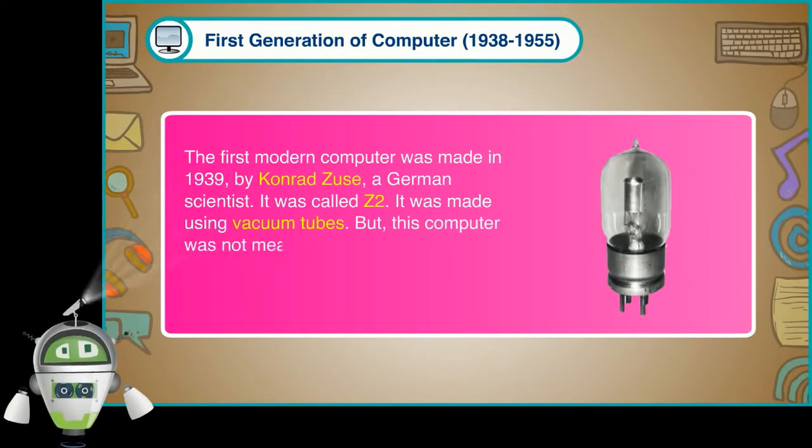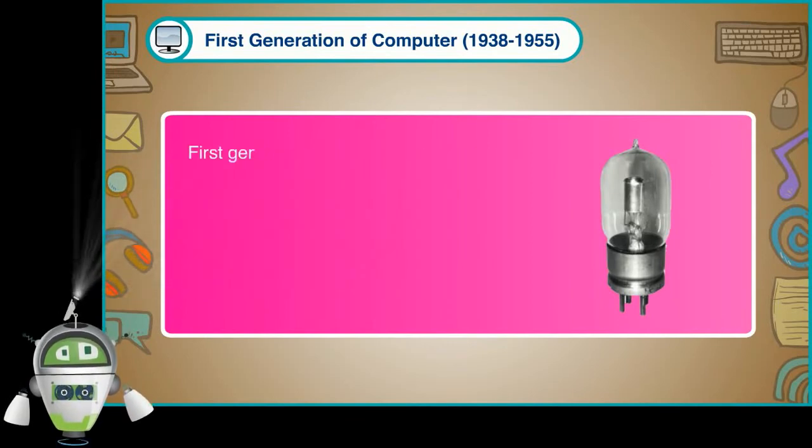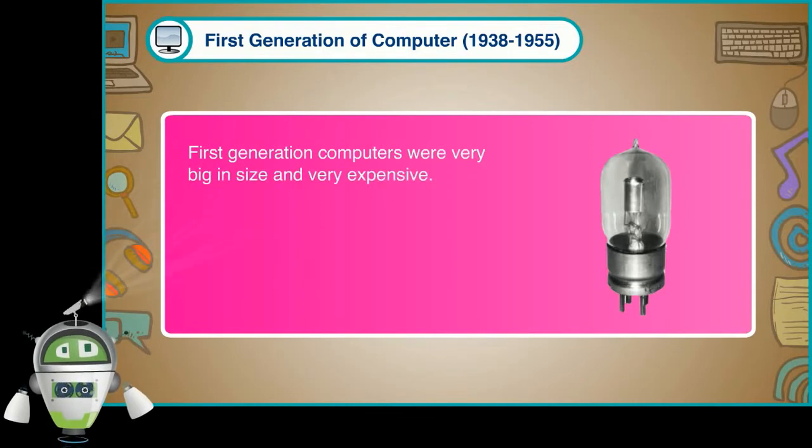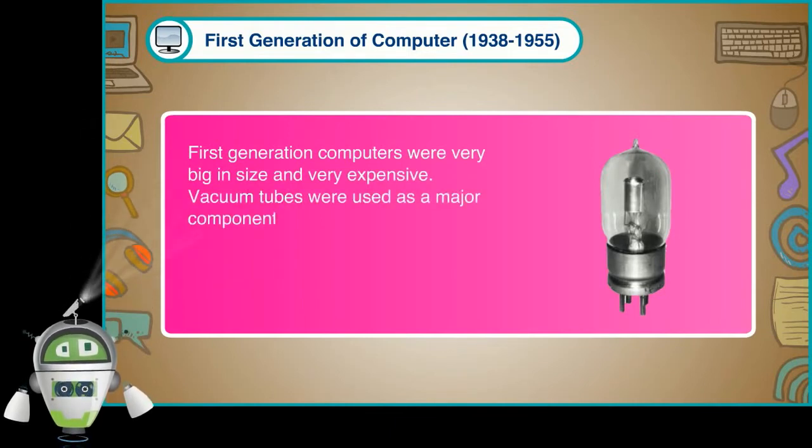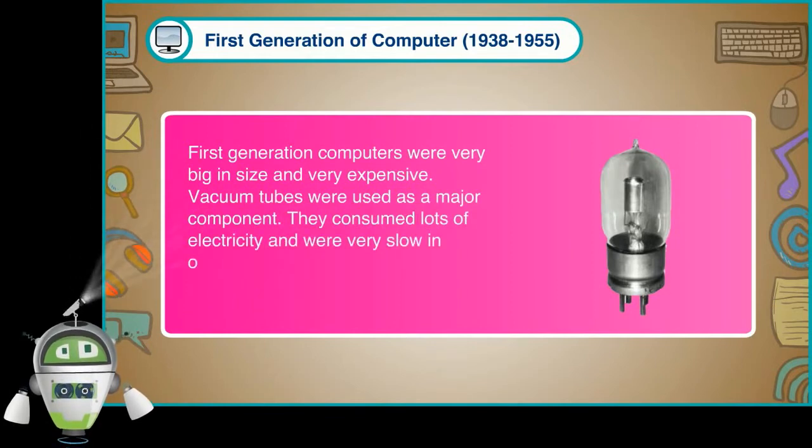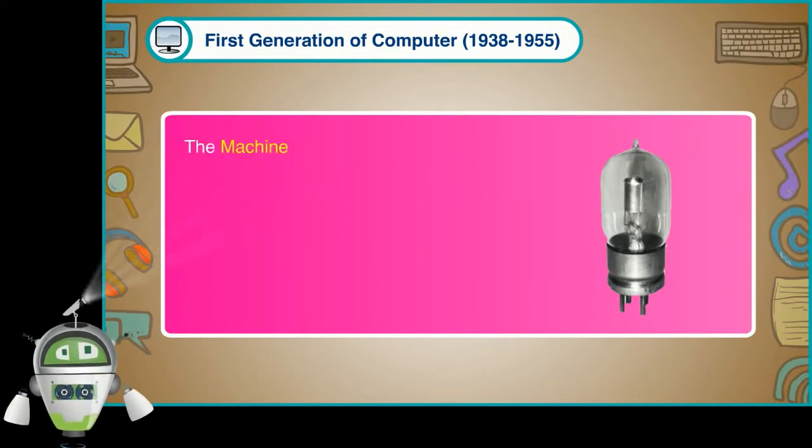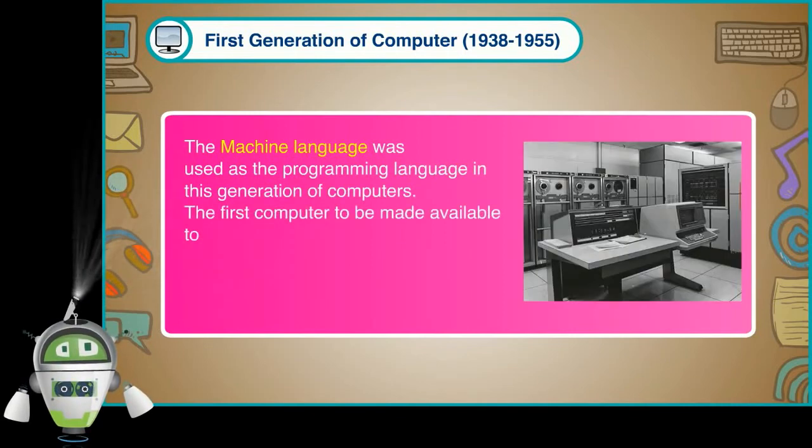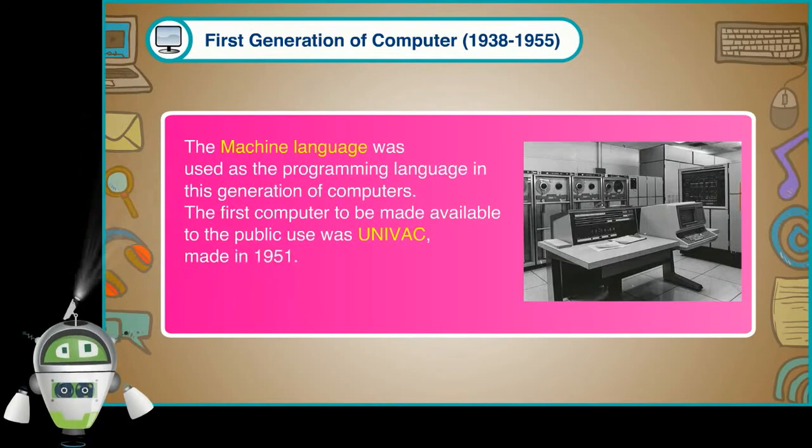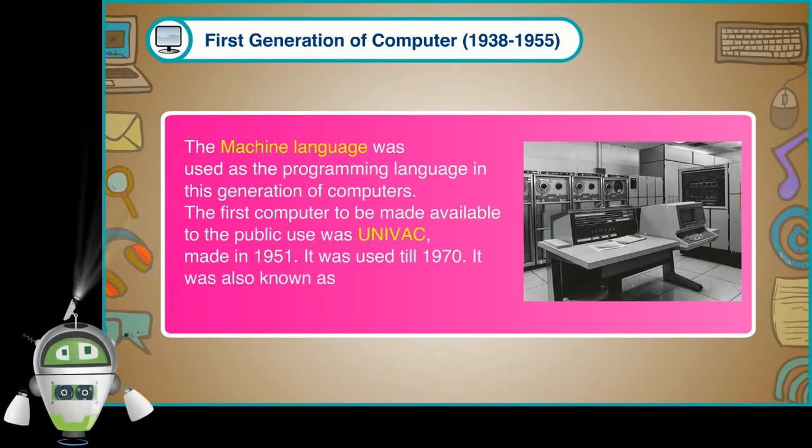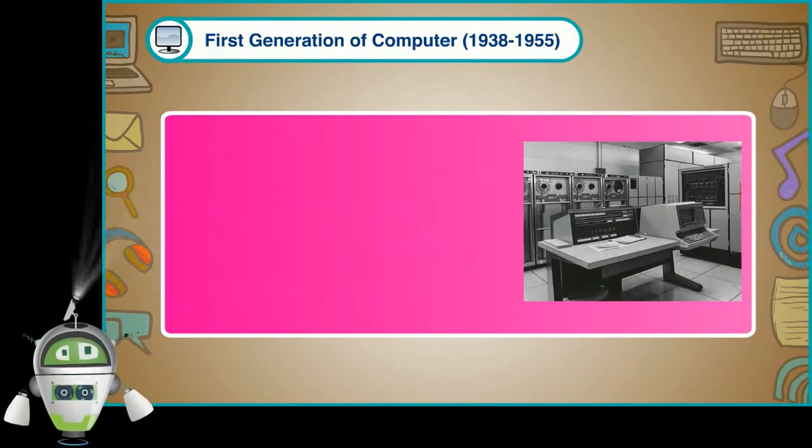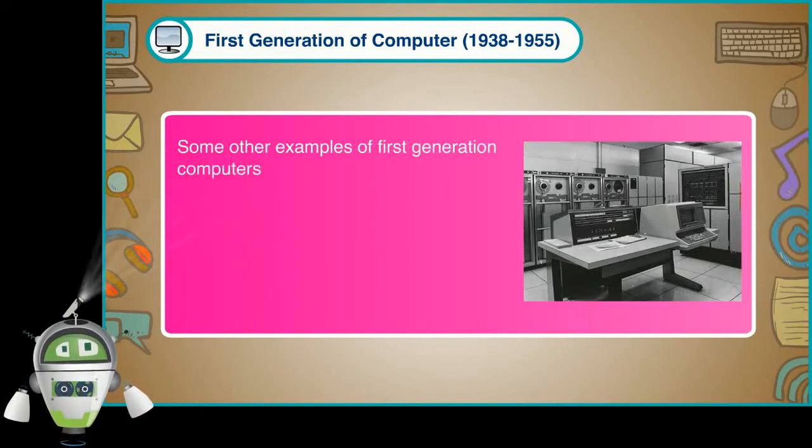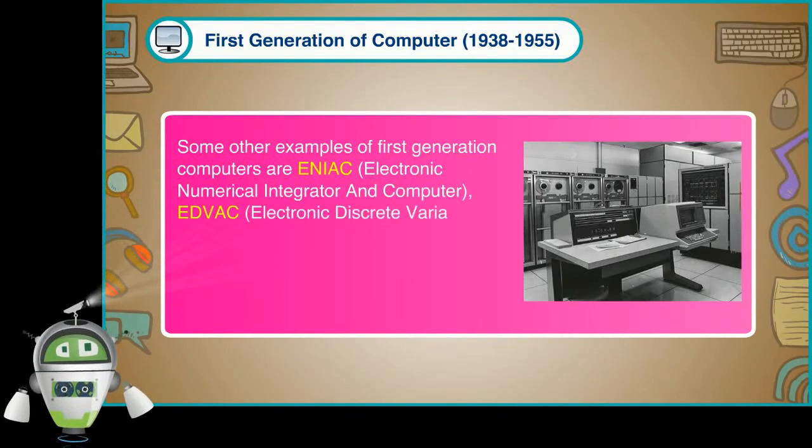But this computer was not meant to be sold to the public since it was extremely slow as compared to today's computers. First generation computers were very big in size and very expensive. Vacuum tubes were used as a major component. They consumed lots of electricity and were very slow in operation besides being highly error prone. The machine language was used as the programming language in this generation of computers. The first computer to be made available to the public use was UNIVAC, made in 1951. It was used till 1970. It was also known as Big Pocket Computer as it was very costly.